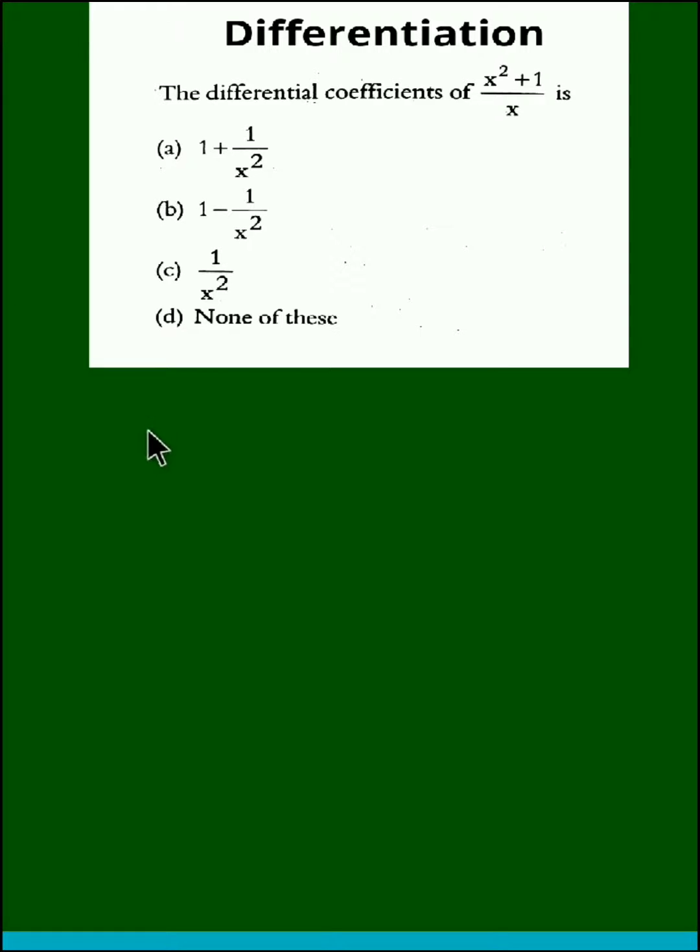So basically we have to find dy by dx. Let us name the given function as y. So let y be equal to x squared plus 1 upon x.